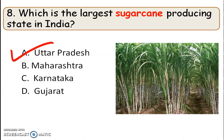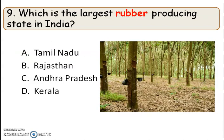The largest sugarcane producing state in India is Uttar Pradesh. Next question: which is the largest rubber producing state in India? The right answer is option D, Kerala.